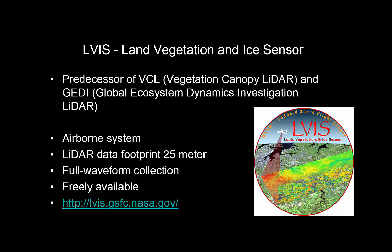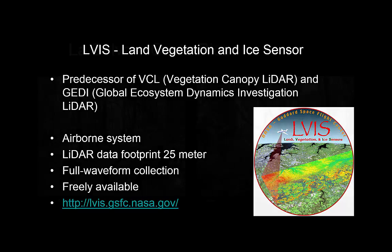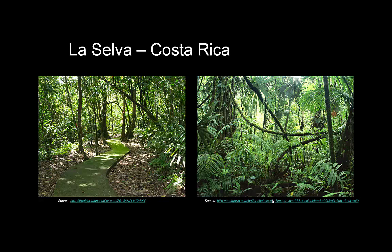ELVIS has a footprint of about 25 meters, so when you look at these data, imagine an area of about 25 meters diameter returning the signal — with lots of different leaves, structures, and so on in there. The data we're going to look at was collected over Costa Rica over a rainforest. Here are a few pictures to give you an idea of what you're looking at — it's a very dense rainforest with epiphytes, lianas, and all sorts of interesting features.